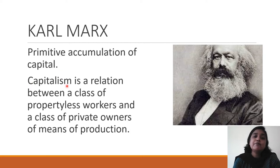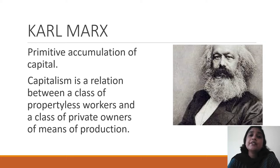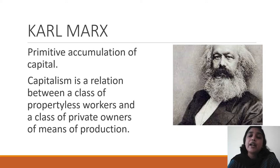Marx says that capitalism is a relation between a class of property-less workers and a class of private owners of means of production. In a capitalist society there are basically two classes: property-less free workers who have no property at all, and another class holding the means of production. Marx describes how by expelling peasants from land, the means of production were concentrated in the hands of landlords, and the expelled peasant became a proletarian.